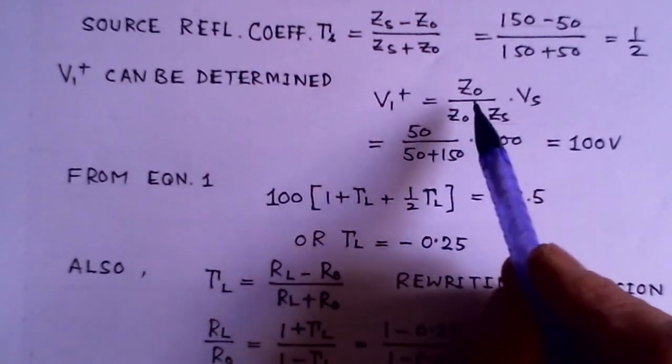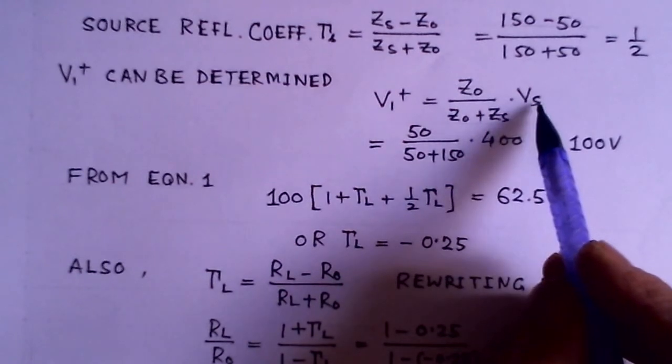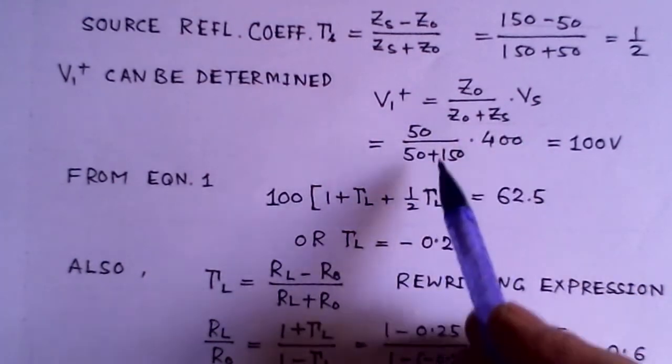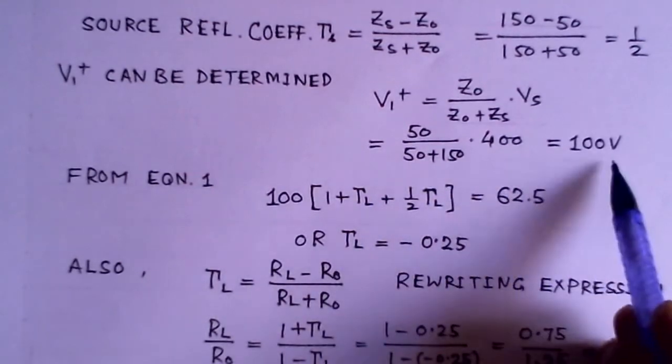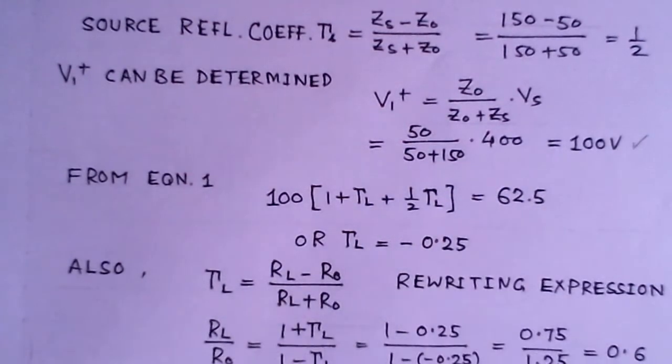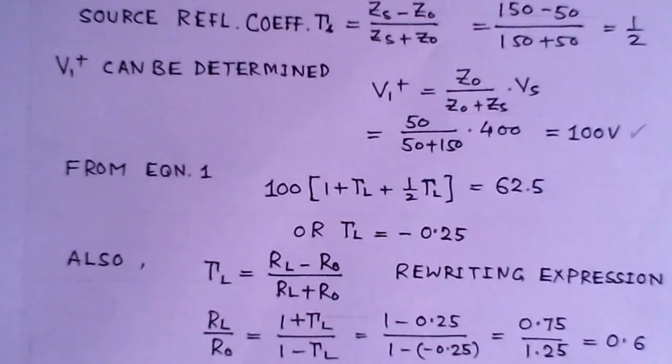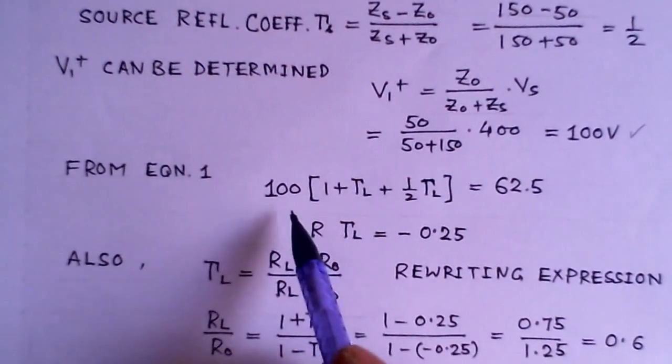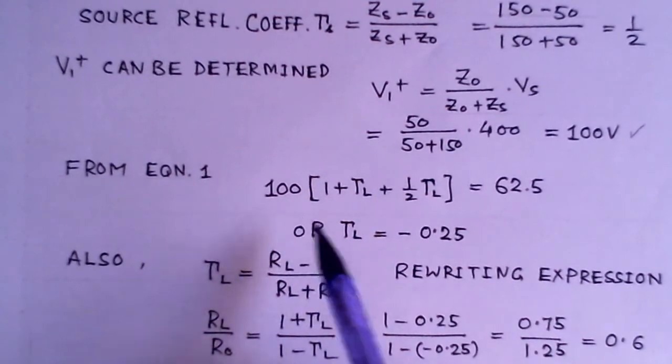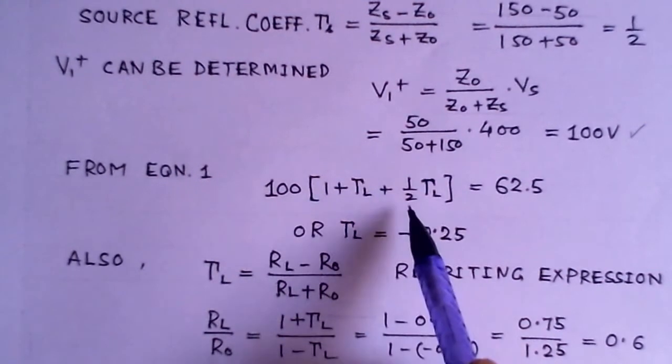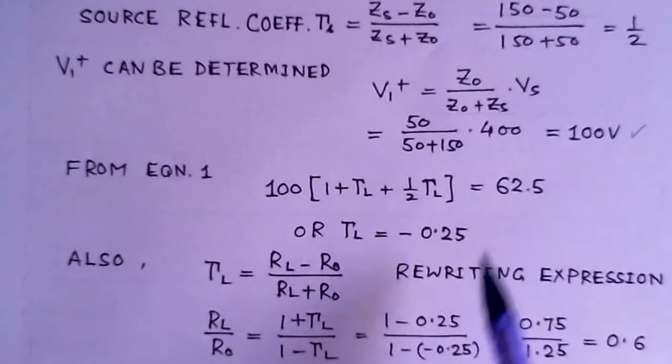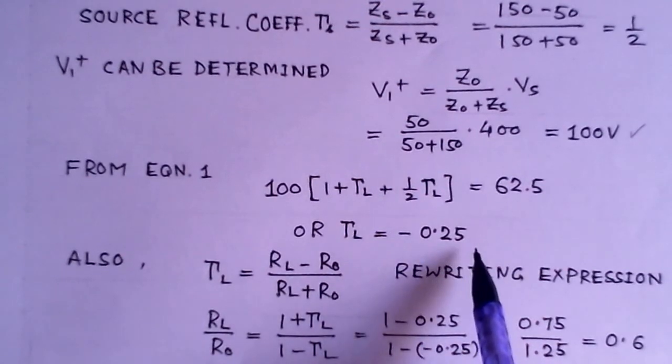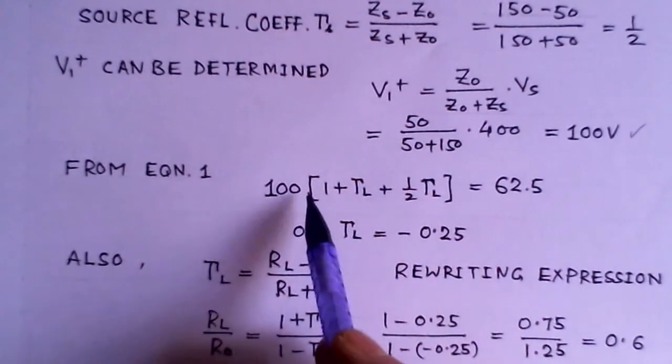Now we can determine V1 plus because we have to apply in that equation. V1 plus would be given by Z0 over Z0 plus ZS into VS. See at the source end, you will find this. This is the value of V1 plus, 50 over 50 plus 150. So it comes to be 100 volts. Now we will use these relations to earlier equation. That was V1 plus into 1 plus gamma L and half. We have substituted the value for gamma S, gamma L is 62.5. Our gamma L turns out to be minus 0.25.